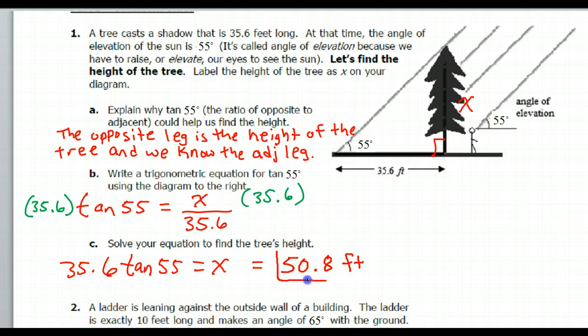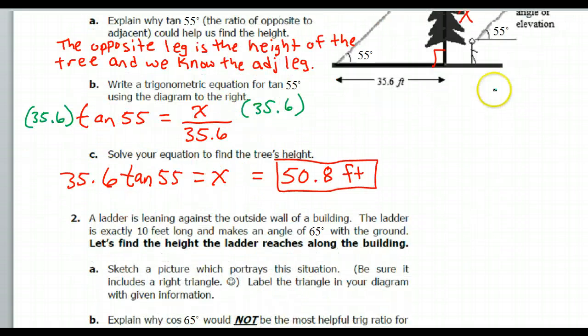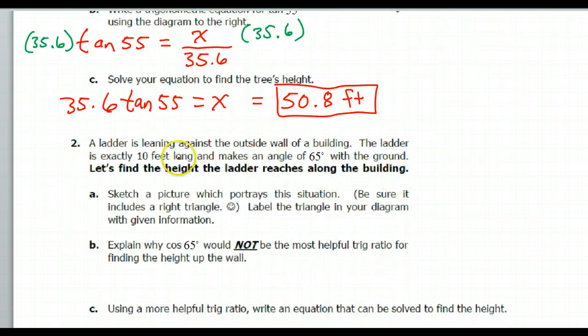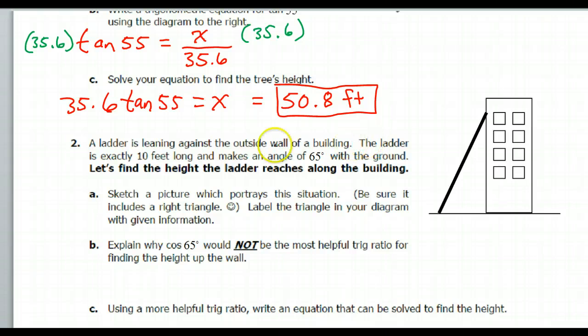Okay, that's the height of that tree. Moving on, number two. A ladder is leaning against the outside wall of a building. The ladder is exactly 10 feet long and makes an angle of 65 degrees with the ground. Let's find the height that the ladder reaches along the building. So we need to sketch a picture. Here's my building, here's my ladder.